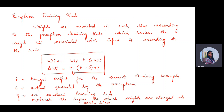This learning rate moderates the degree to which the weights are changed at each step. T is the target output for the current training example, and O is the output generated by the perceptron — the value obtained after passing the weighted inputs through the activation function. This formula is the perceptron training rule used to learn the weights of the perceptron.